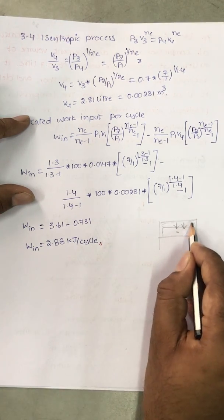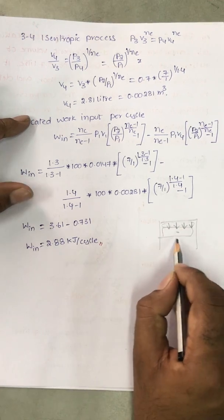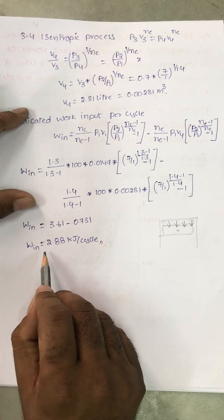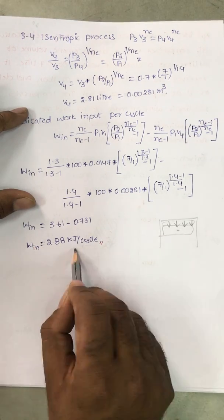Some amount of air is there. Some amount of expansion we are getting. So this is small work 0.73, this is very high. Work input is 2.88 kJ per cycle.